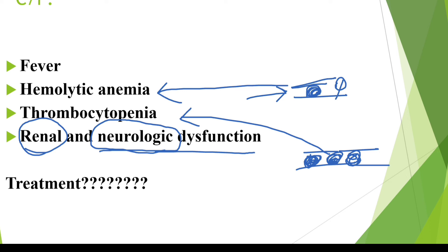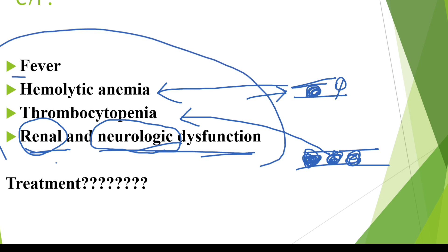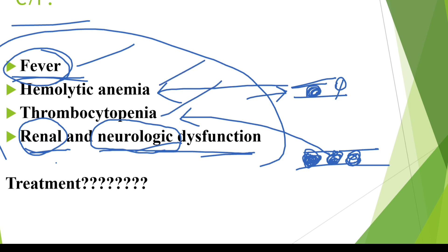To summarize: uncontrolled thrombus formation within the body leads to obstruction in blood flow, causing breakdown of RBCs and hemolytic anemia. Excessive use of platelets in forming platelet plugs results in thrombocytopenia — relatively fewer circulating platelets. Thrombus formation in vital structures like the kidneys and CNS causes organ dysfunction. Additionally, release of cytokines and inflammatory mediators causes fever. The pentad of thrombotic thrombocytopenic purpura is therefore: fever, hemolytic anemia, thrombocytopenia, renal dysfunction, and neurological dysfunction.